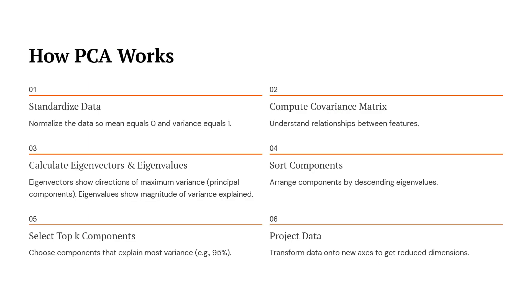Let us understand how PCA actually works step by step. Step 1: we start by standardizing the data — we normalize all features so they have a mean of 0 and a variance of 1. Step 2: we compute the covariance matrix, which helps us understand how different features are related to each other. Step 3: we calculate eigenvectors and eigenvalues. Eigenvectors show the directions where the data varies the most, and eigenvalues tell us how much variance each direction captures.